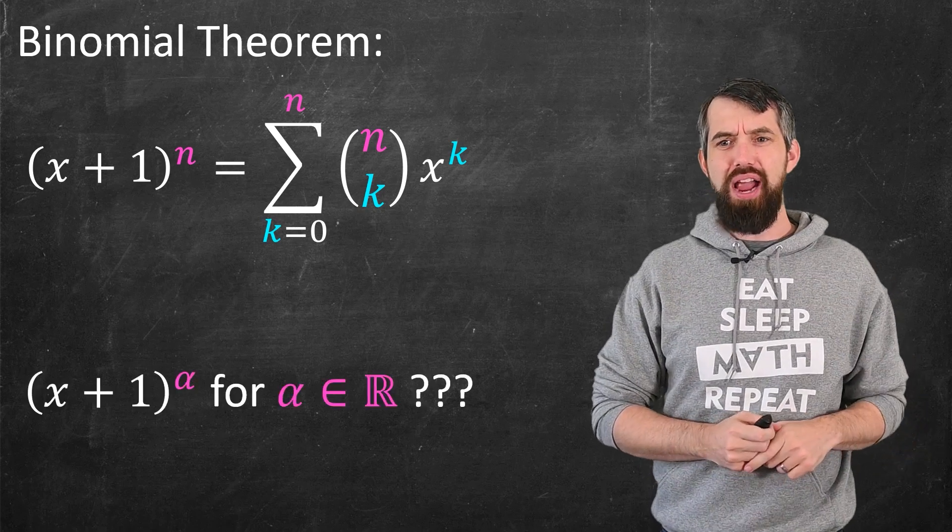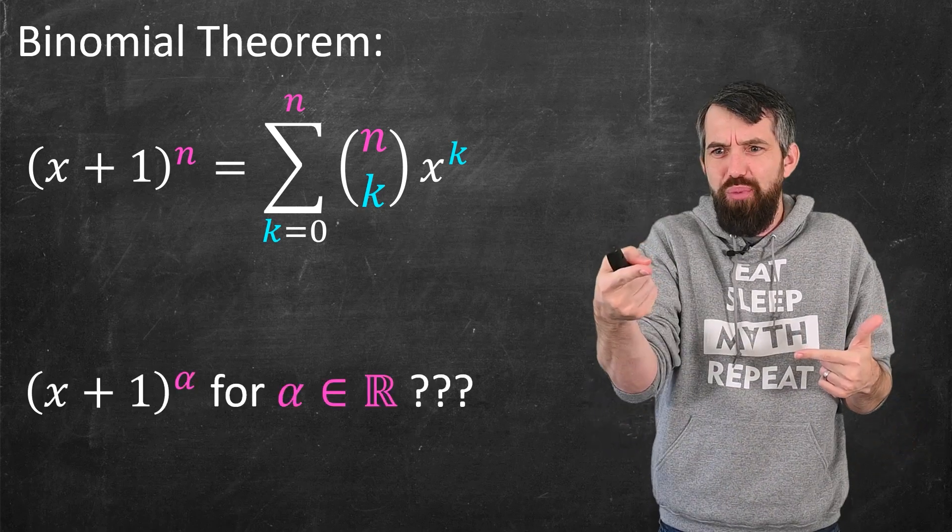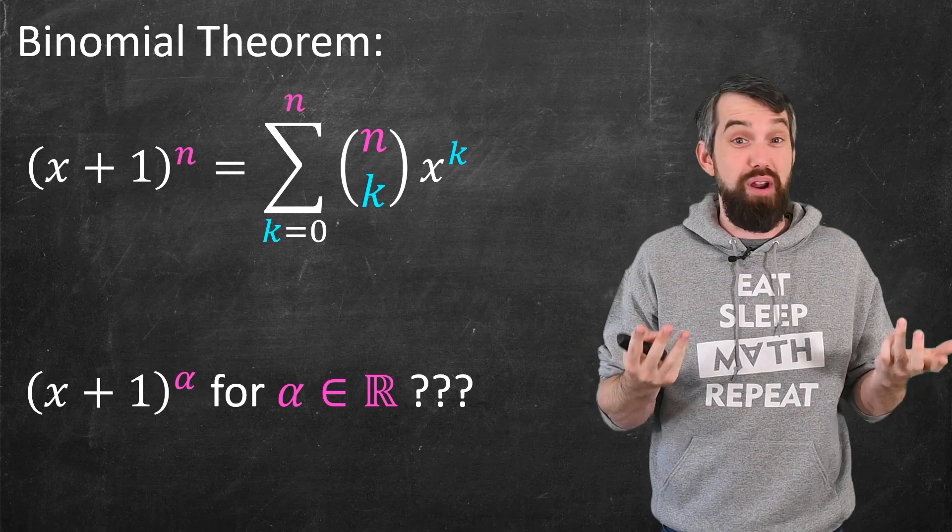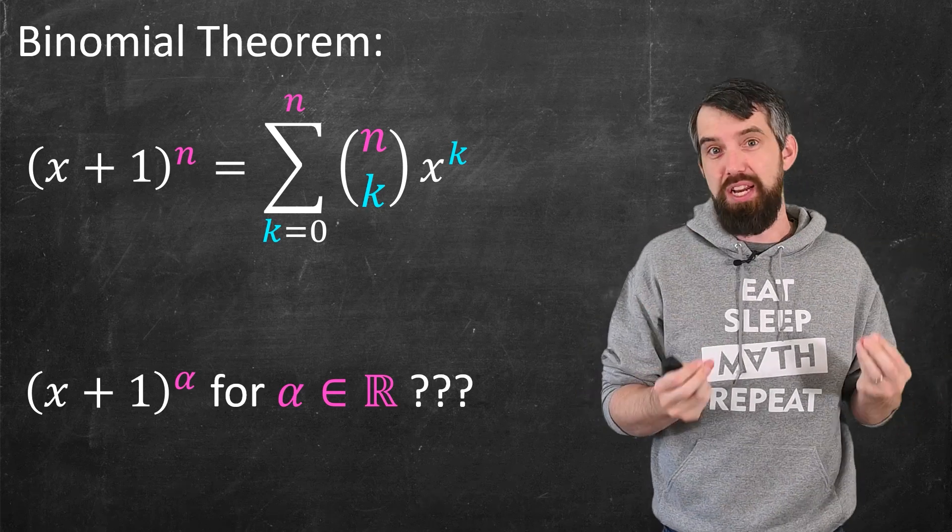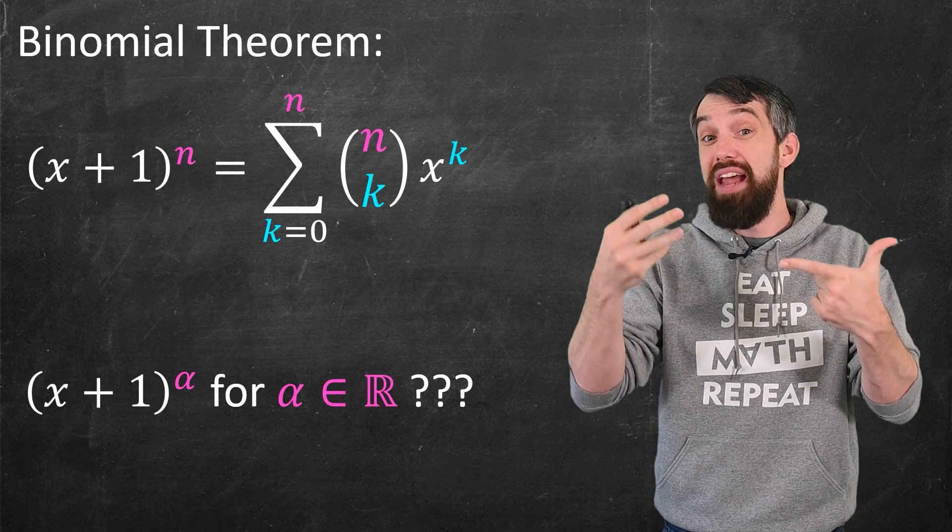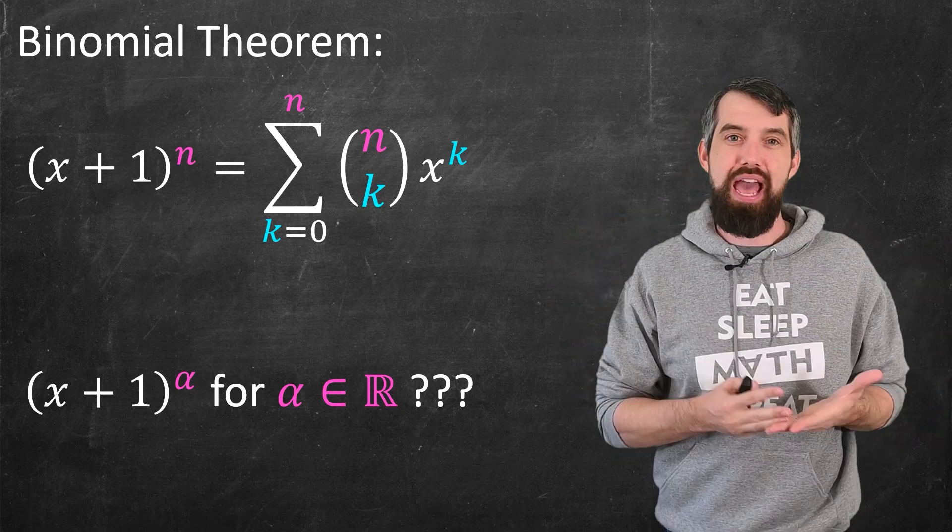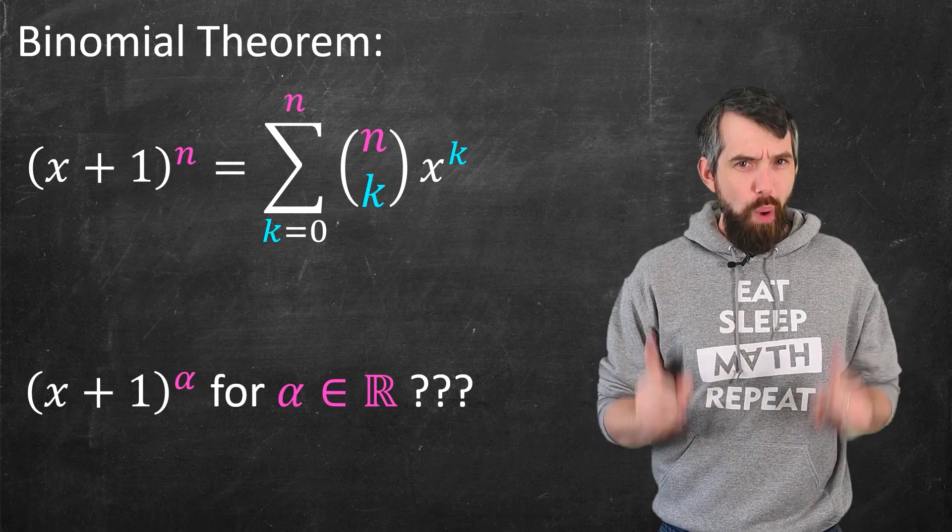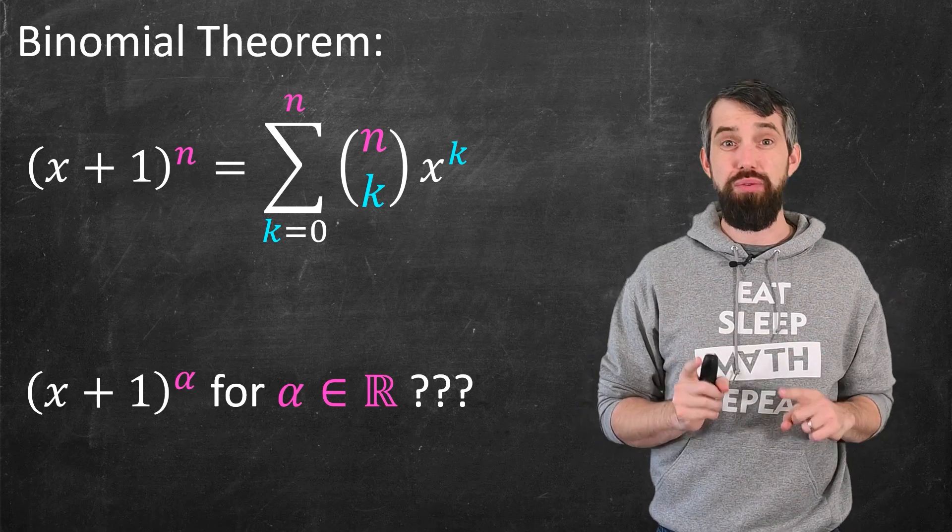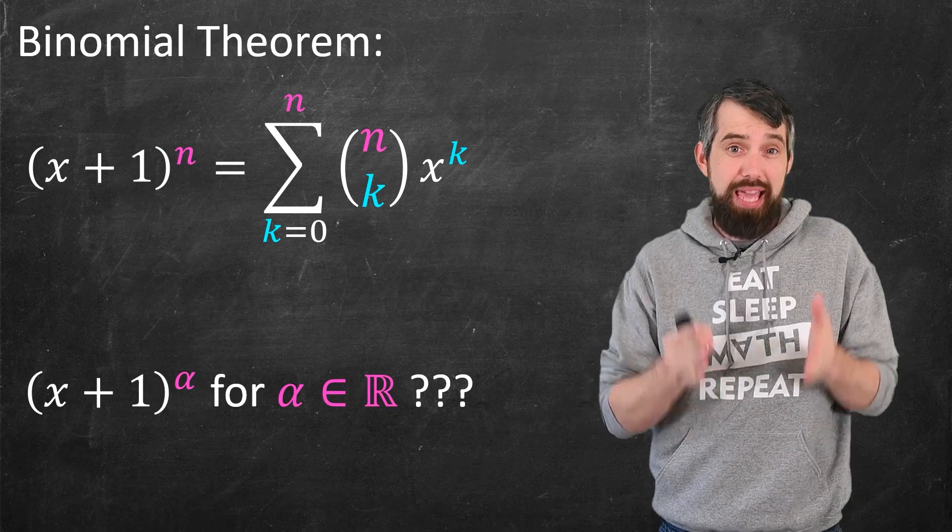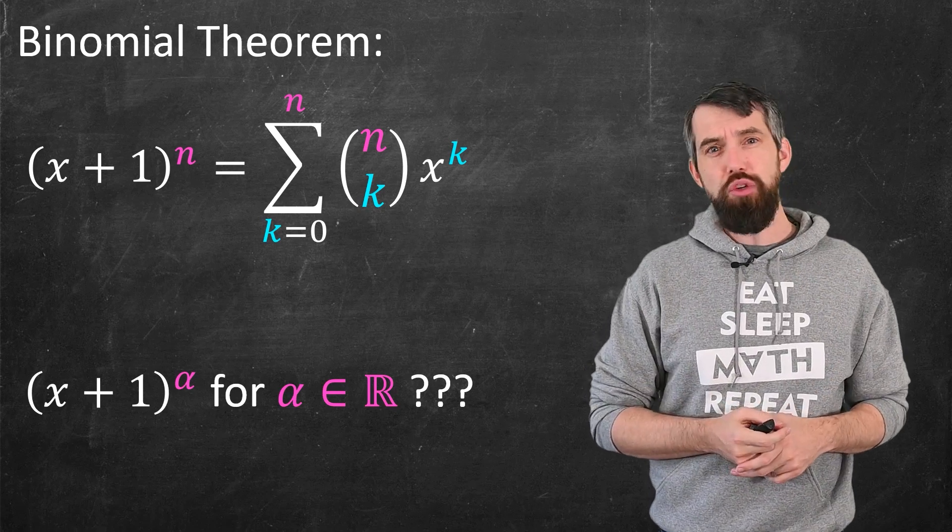Like, if I wanted to define x plus 1 to the alpha, where alpha was just some arbitrary real number, or indeed even a complex number if you wished, could I do that too? Could I come up with some sort of analogous series to this formula that I have for the binomial theorem? Now, one thing in the binomial theorem I think I can do nicely, that's that n choose k portion.